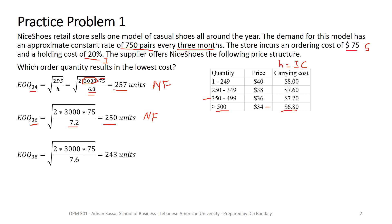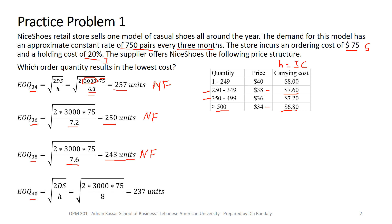Moving to the price of 38, we use H = 7.6 (20% × 38) and get EOQ₃₈ = 243, which is also outside its range and not feasible. Finally, for the highest price of 40, we use H = 8.0 (20% × 40) and get EOQ₄₀ = 237 units, which is feasible because it lies within its corresponding range.